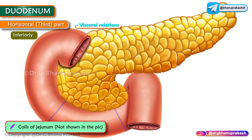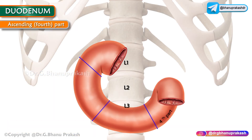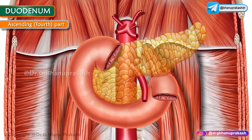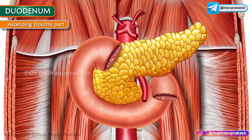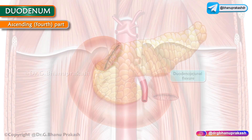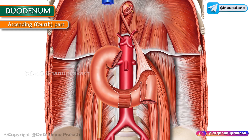The fourth part, also called the ascending part of the duodenum, is short — five centimeters — and begins to the left of the L3 vertebra. It rises superiorly as far as the superior border of L2, runs superiorly along the left side of the aorta to reach the inferior border of the body of the pancreas, then goes anteriorly to join the jejunum at the duodeno-jejunal flexure.